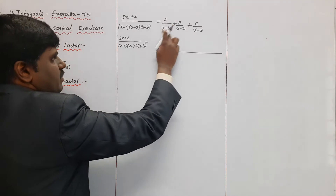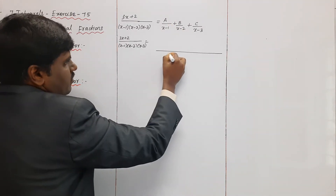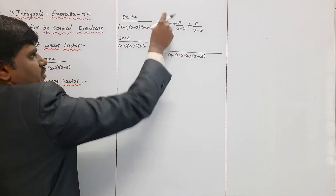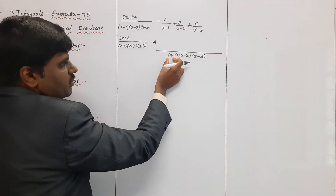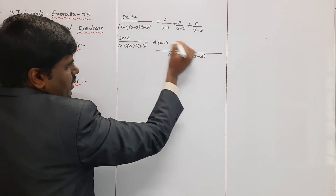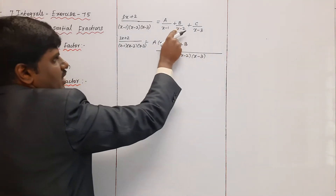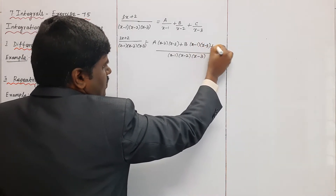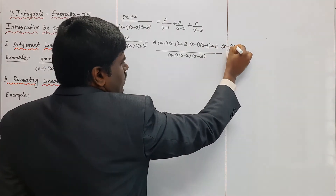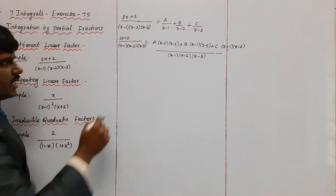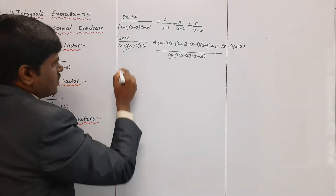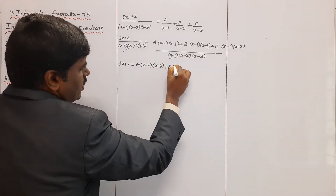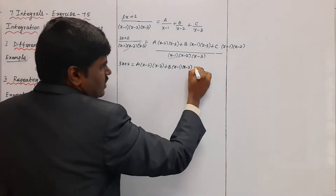Taking LCM as (x−1)(x−2)(x−3), the equation becomes: 3x + 2 = A(x−2)(x−3) + B(x−1)(x−3) + C(x−1)(x−2). The denominator cancels on both sides, leaving this expanded form which we will use to find A, B, and C by substituting the factor values.